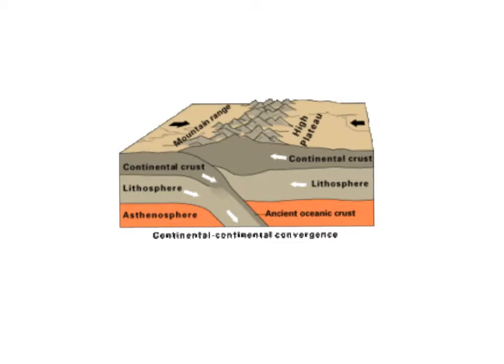The first type of plate boundary we looked at was called convergent. Convergent — the plates are colliding; they are going towards each other. When this happens with two pieces of continental crust, the pieces push into each other and push up to form a mountain range.